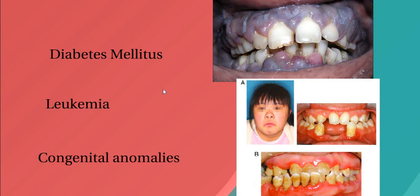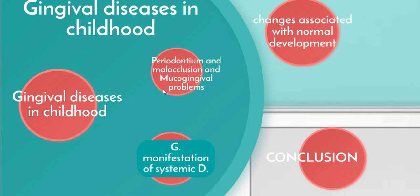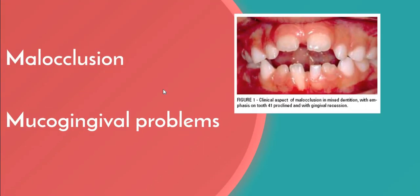Those are some of the systemic diseases. In cases of the condition of periodontium in malocclusion and mucogingival problems, data indicated an association between abnormal tooth position and gingivitis. Crowding in the mixed dentition can often make plaque and food removal more difficult, leading to an increased incidence of gingivitis.